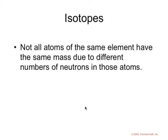Remembering about isotopes, not all atoms of the same element have the same mass due to the different number of neutrons in those atoms. They differ in physical properties, such as density, rate of diffusion, and ability to be deflected by an electromagnetic source in a mass spectrometer.